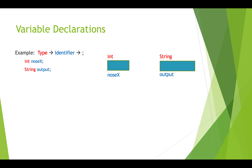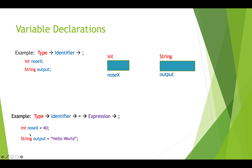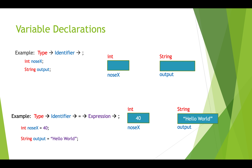There's another way where we create the box and put something in it all at once. So 'int noseX = 40' says: give us a box in memory that can hold integers, call it 'noseX', and put the value 40 in it to begin with. Similarly, we can put the value 'hello world' into the output box at the same time we create it.